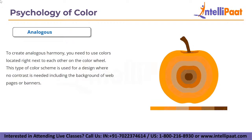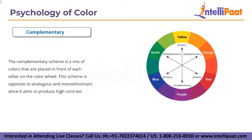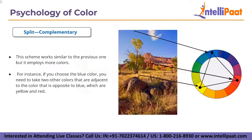The complementary scheme is a mix of colors placed opposite each other on the color wheel. This scheme is opposite to analogous and monochromatic since it aims to produce high contrast. For example, an orange button on a blue background is hard to miss in any interface.